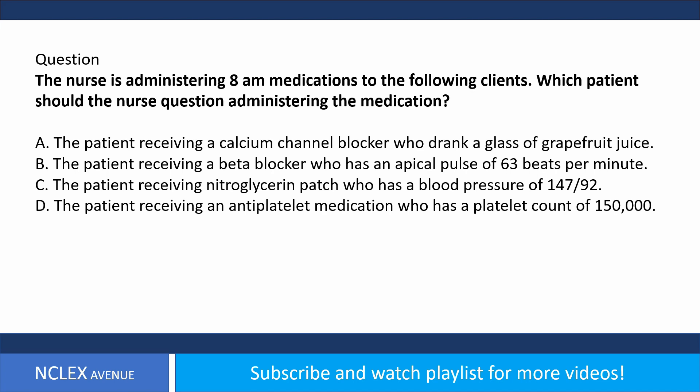B. The patient receiving a beta blocker who has an apical pulse of 63 beats per minute. C. The patient receiving a nitroglycerin patch who has a blood pressure of 147 over 92. D. The patient receiving an antiplatelet medication who has a platelet count of 150,000.